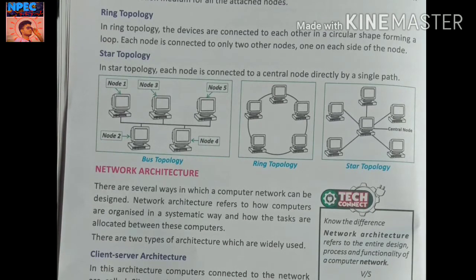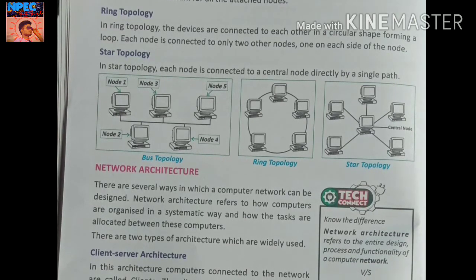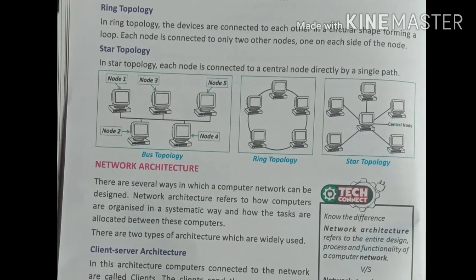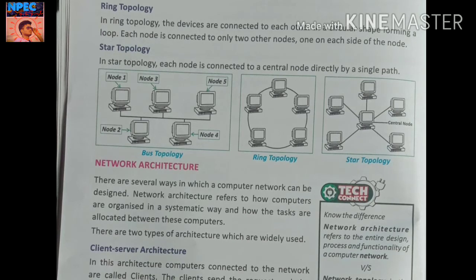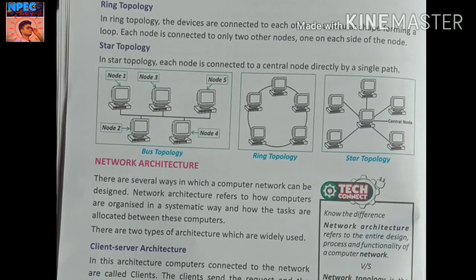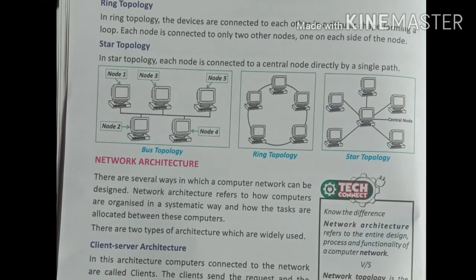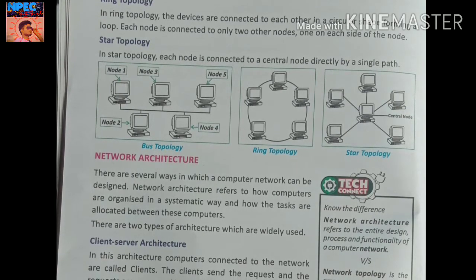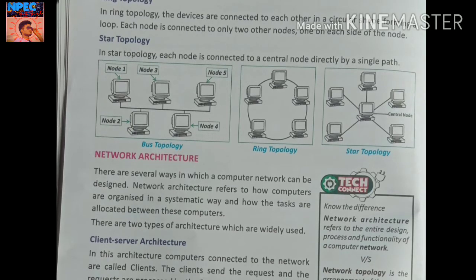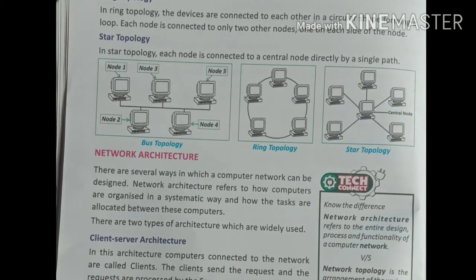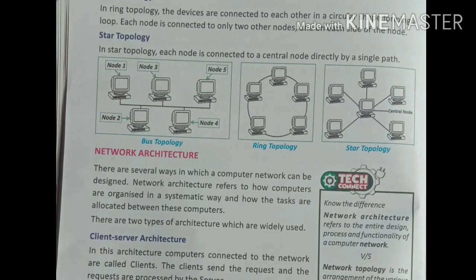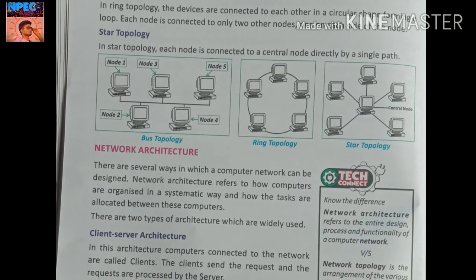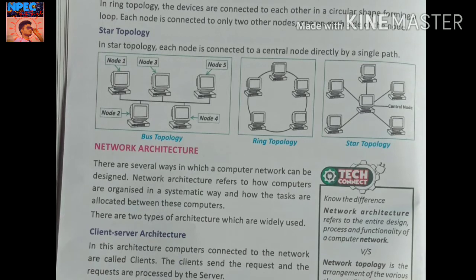In Star Topology, each node is connected to a central node directly by a single path. There is one central node, and all other nodes are connected to it directly through a single path. As shown in the figure, all five nodes are connected to the central node — this is the star topology pattern.